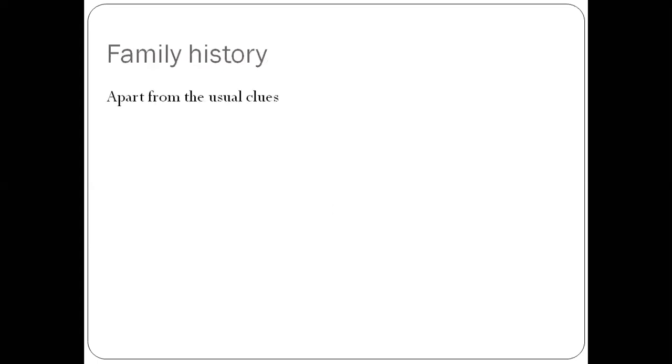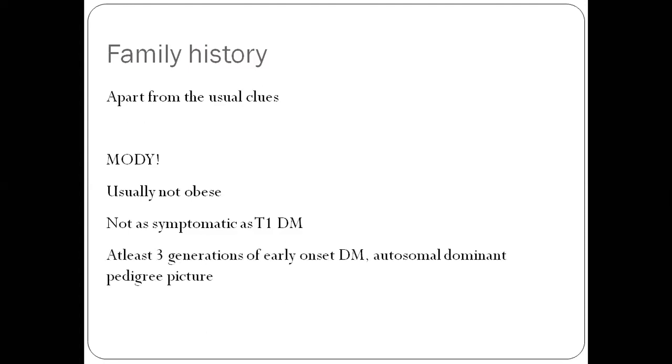Family history can help you think of or diagnose MODY. MODY patients are typically lean. They are not insulin dependent. They don't have typical symptomatic presentations like DKA. Some of them can have mild hyperglycemia, but quite a few have moderate to severe hyperglycemia. India seems to have MODY 3 more than MODY 2. You should have at least three generations of early onset diabetes. That is important. The three generations must have had diabetes onset at a young age. You should get an autosomal dominant picture when you draw a pedigree chart. These features will help you point towards MODY.